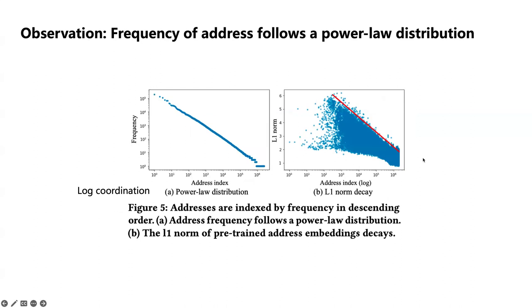This can be reflected by their L1 norm after pre-training. This observation suggests that the majority of addresses do not need a large embedding dimension to represent their knowledge.